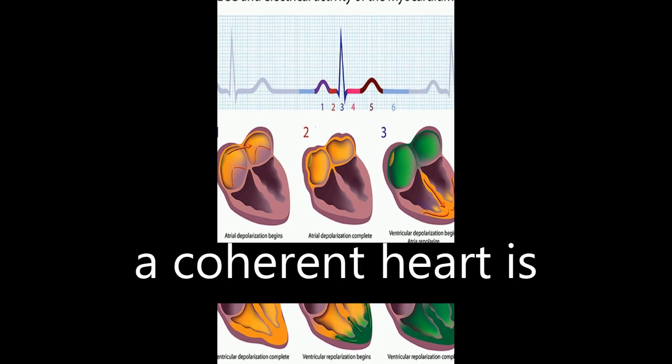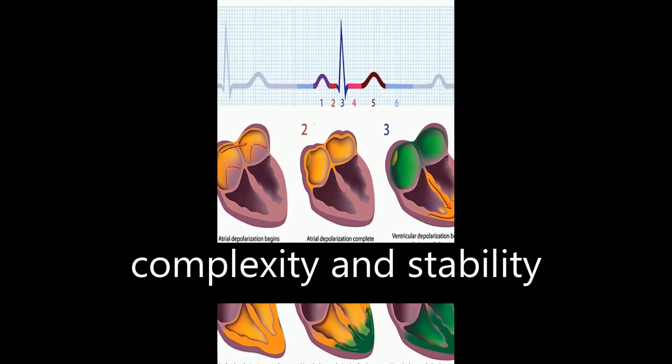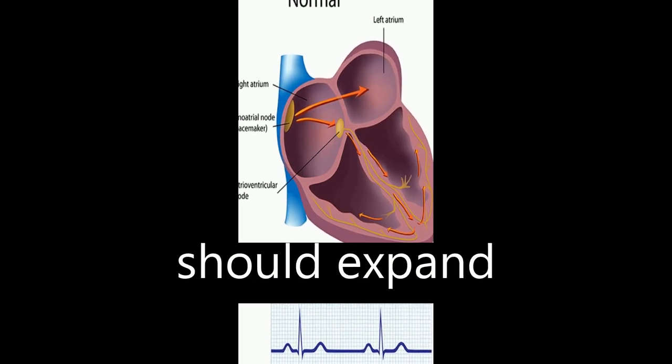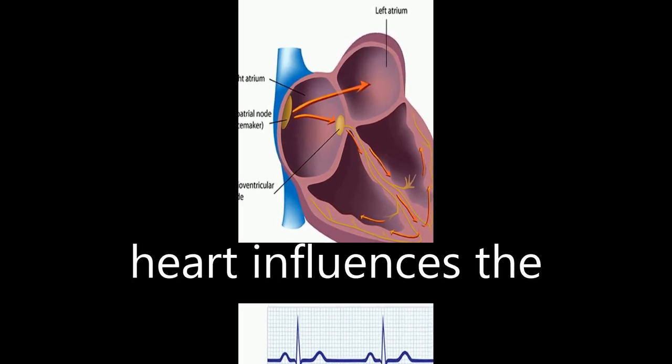The authors conclude that a coherent heart is characterized by both complexity and stability over longer time scales, and future research should expand understanding of how the heart influences the brain.